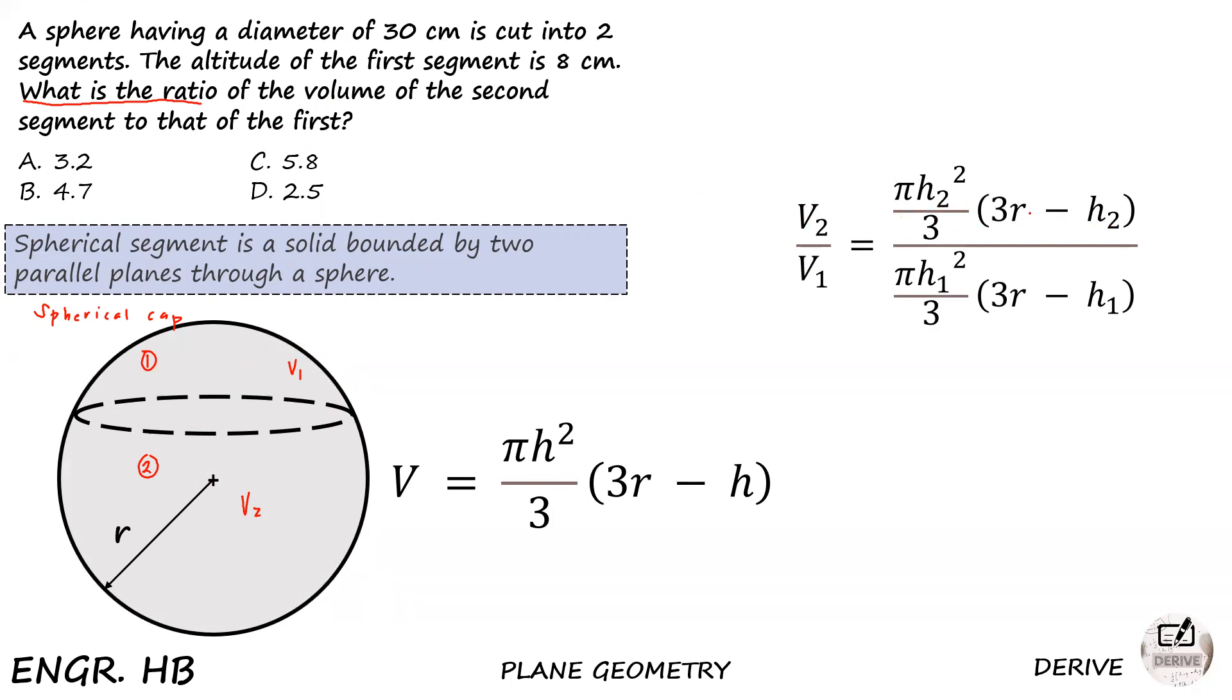So what is this h? The trick here guys is that the radius of the sphere is constant to both the radius of the two segments. Meaning if the radius of your sphere is, say, 10 cm, the first segment will also have radius of 10 cm, and of course the second segment has radius of 10 cm. In this case, we have a given diameter of 30 cm. This means if our diameter is 30 cm, just divide it by 2. So 30 over 2, our radius is 15 cm.